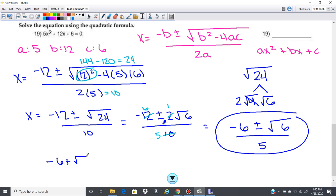Negative 6 plus radical 6 over 5, and then comma negative 6 minus radical 6 over 5, where we're splitting up the plus or minus there. So that could work as well.